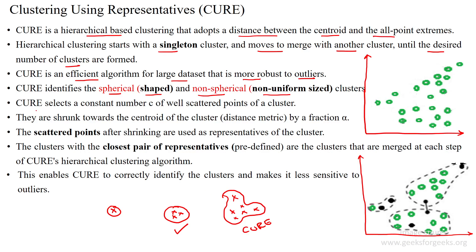Initially, CURE selects a constant number of well-scattered data points from each cluster. These constant well-scattered data points then shrink towards the centroid of the cluster based upon the Euclidean distance by a fraction alpha. The well-scattered data points are selected as reference points.